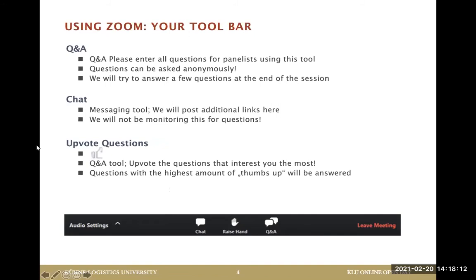You have the chance to ask any question using the toolbar in Zoom. You'll find the Q&A button at the bottom of your desktop — use it to submit questions and we'll answer as many as possible at the end of our session. Questions are always asked anonymously. You can also upvote questions you're most interested in, and those with the highest thumbs-up will be answered first.